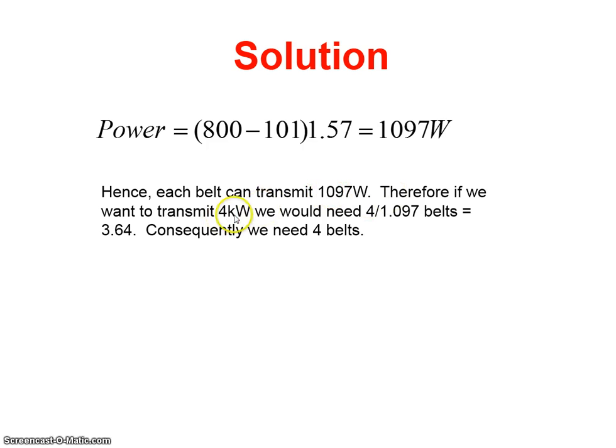To transmit 4 kilowatts, we divide 4 by 1.097, which gives 3.64. We can't have 0.64 of a belt, so we need 4 belts. The answer is 4 belts.